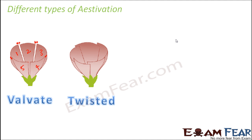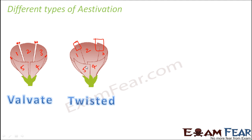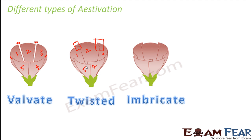In twisted aestivation, the margin of one petal overlaps with the margin of the next. Petal one's margin overlaps with petal two, petal two's margin overlaps with petal three, and so on. That is twisted aestivation.